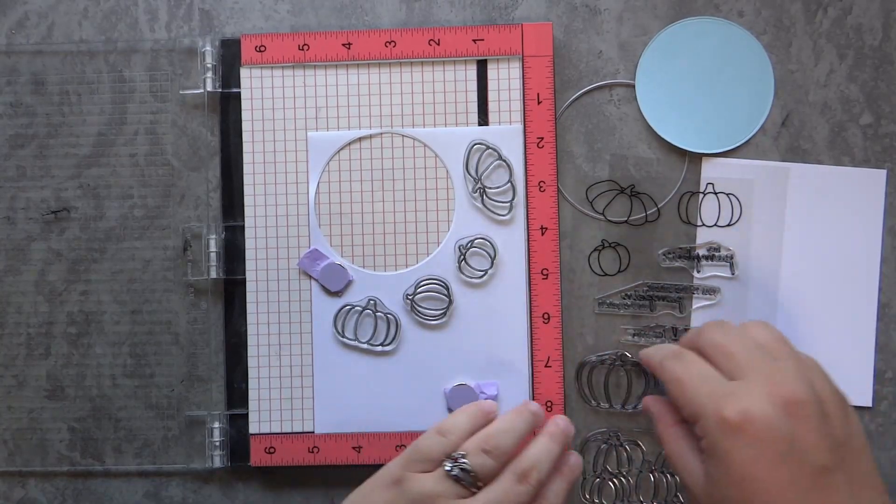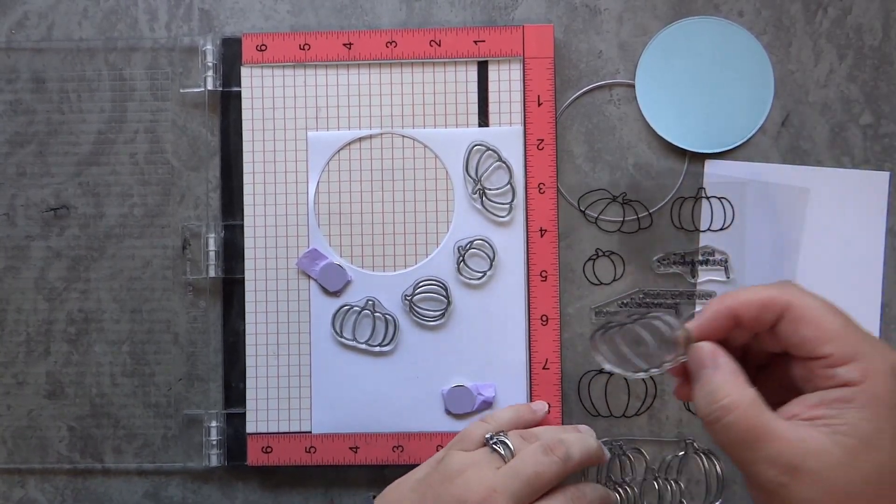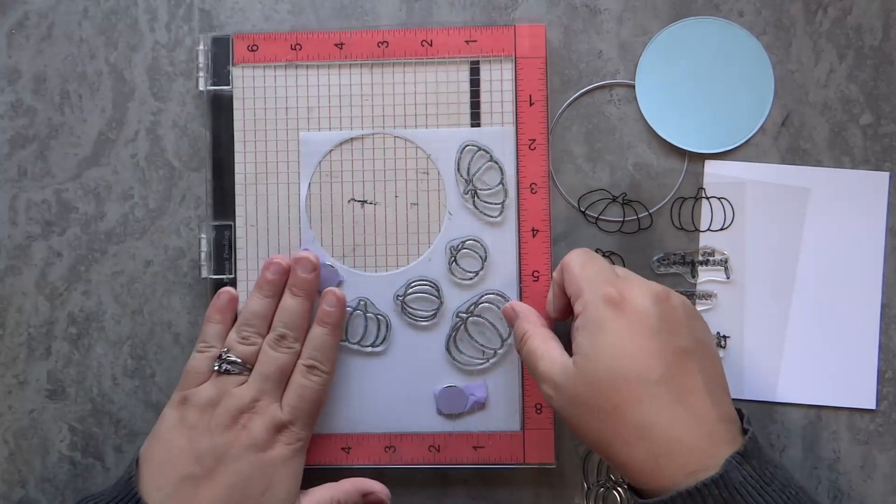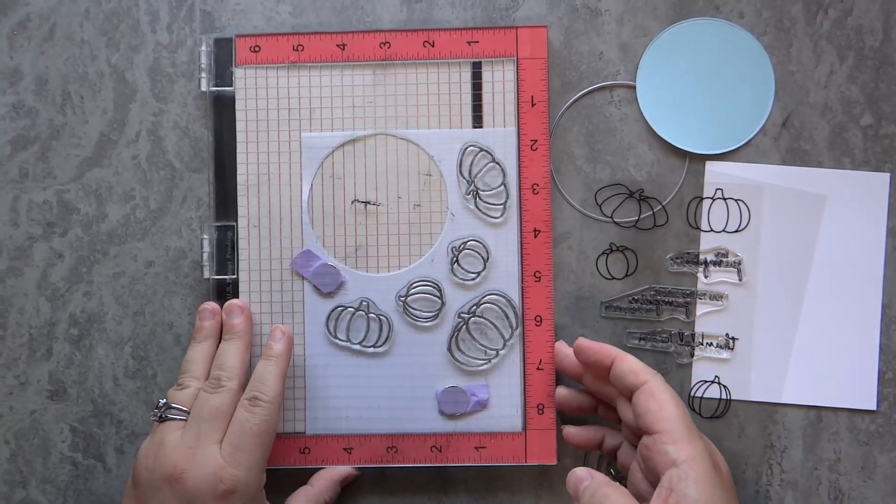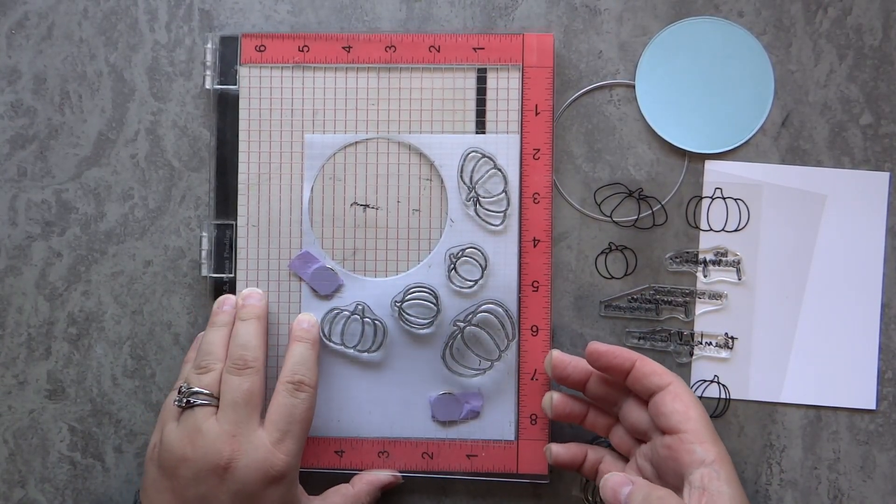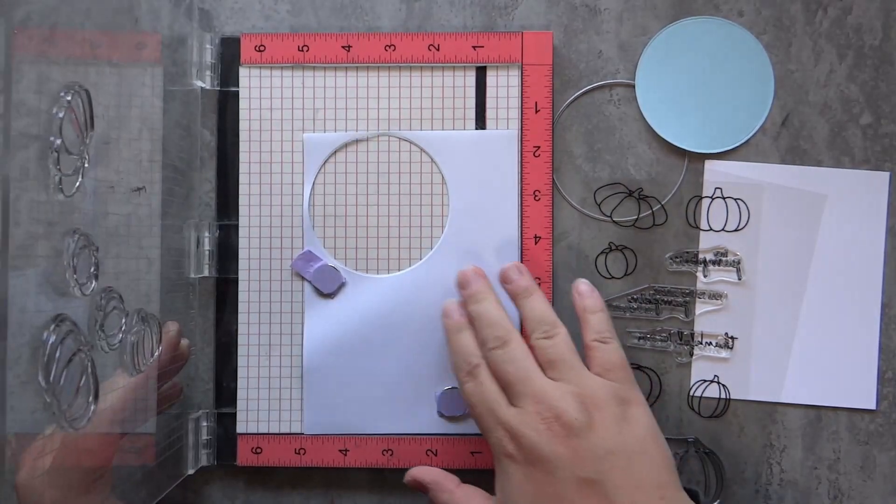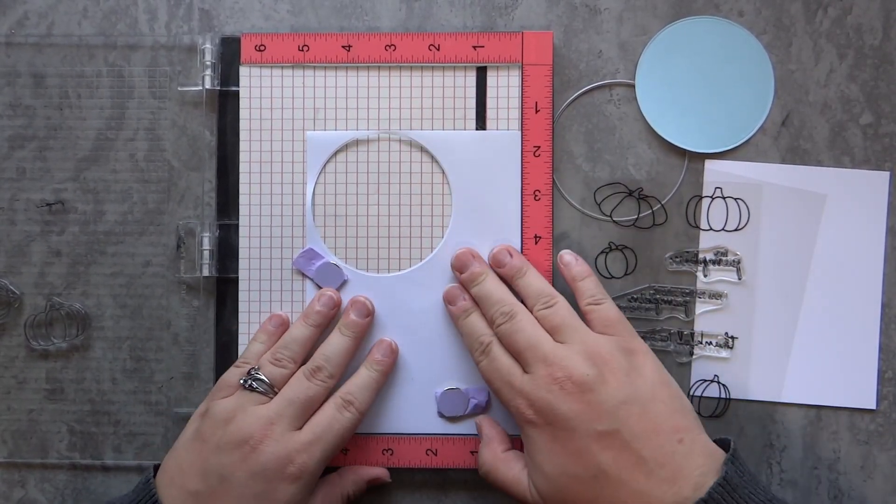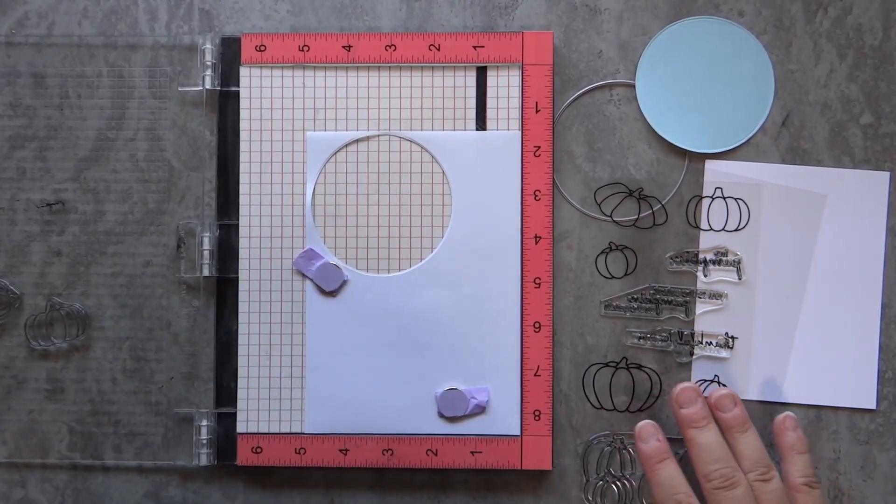This set does have dies available, but I won't be using those today. The blue piece of paper you see is masking paper, and I'll also be using a circle die from my stash, a piece of Neenah 110 pound cardstock, along with some Copics and Distress Oxide inks.